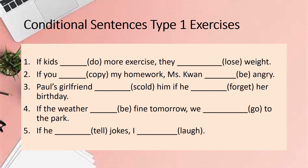Let's do some exercises on conditional sentence type 1. When we handle conditional sentence questions, the first thing we should do is decide which type to use. Question one: If kids do more exercise, they will lose weight. Losing weight is a very possible result of doing exercise, so we use type 1. For the if clause we use present tense; for the main clause we use future tense 'will lose'. Question two: If you copy my homework, Ms. Kwan will be angry — a possible result, so we use type 1 with future tense in the main clause and simple present tense in the if clause.